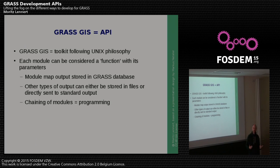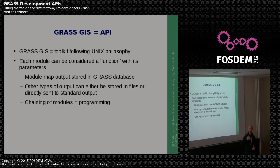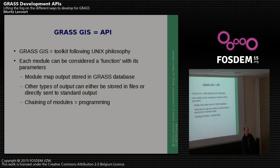GRASS was built up following the Unix philosophy, the KISS principle. So each GRASS module does one thing, does it well, and has defined parameters. As Marcus just showed, you can look at them in different ways, including as WPS or XML descriptions. Each module can almost be seen as a function that you can then chain together to build your own applications.